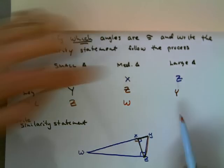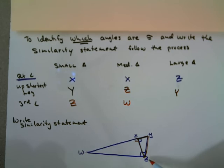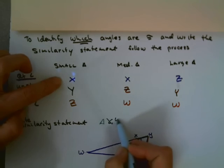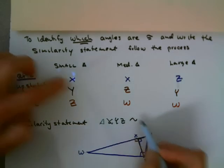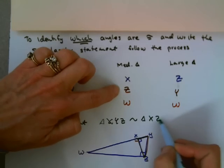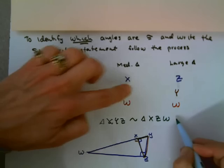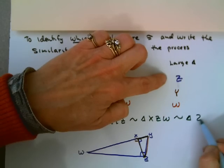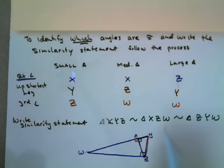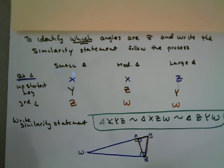So to write my similarity statement, now I'm just going to put these in order. Triangle XYZ is similar to triangle XZW, and that's similar to triangle ZYW. Just reading right down here. So that's how, the easiest way to write a similarity statement. Look at your three triangles, identify your right angle, up the short leg, and grab your third angle. And you've got it. So that's the first thing we wanted to share with you.